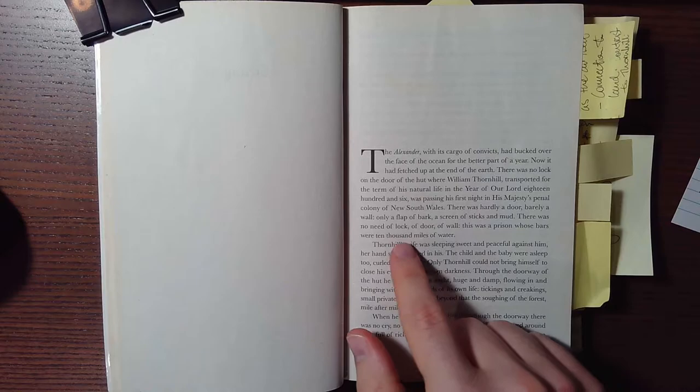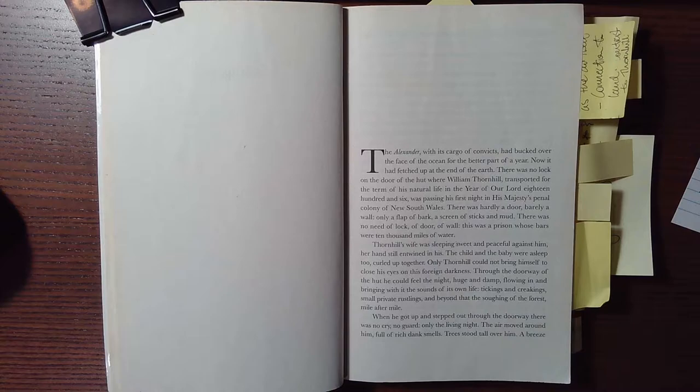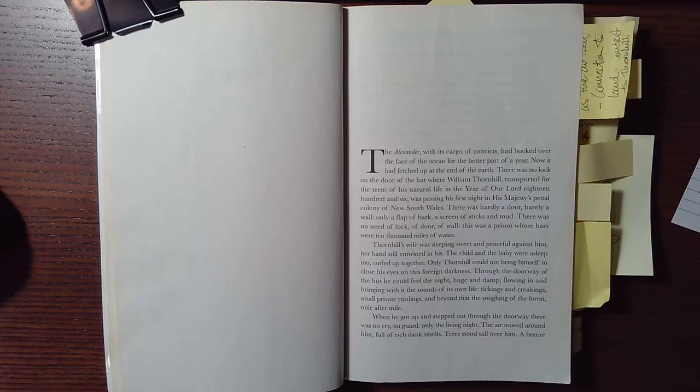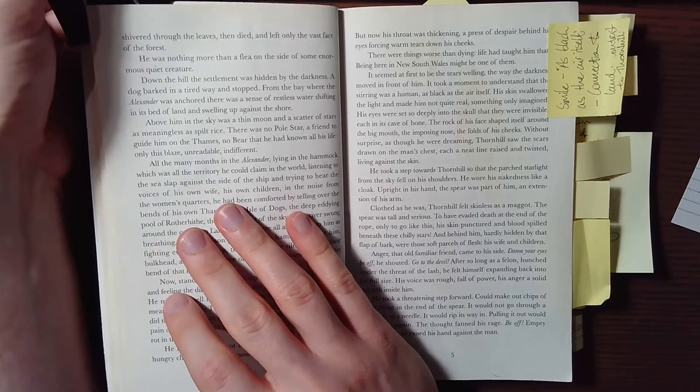There was no need of lock, of door, of wall. This was a prison whose bars were 10,000 miles of water. And that's not his home, the prison. It's Australia being the prison and the 10,000 miles of water are the bars. And I love that use of metaphor there that it's a prison and the bars are this vast sea.